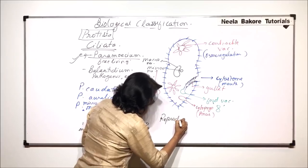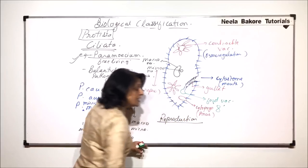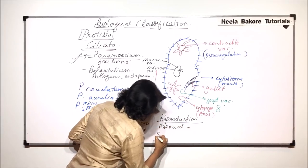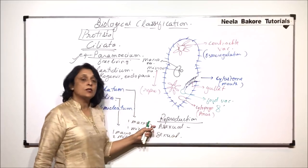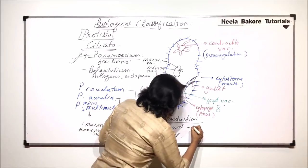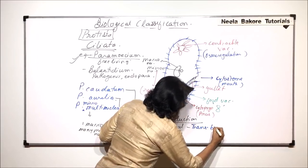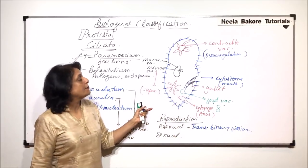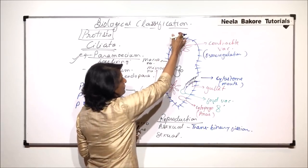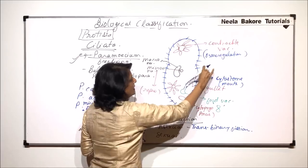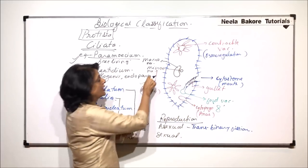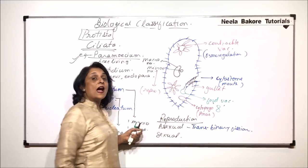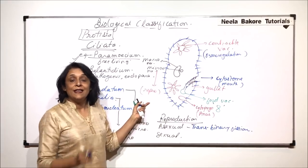Reproduction in case of paramecium is by both means: asexual as well as sexual. Asexual is by transverse binary fission. Now how is this transverse binary fission going to take place? Transverse means along, if this is the longitudinal axis, cytokinesis is going to take place transversely. But if the cell divides like this, there is only one gullet which goes in one half, and the other half or the other daughter cell is not going to get the gullet or the mouth.